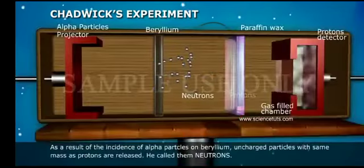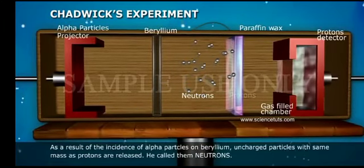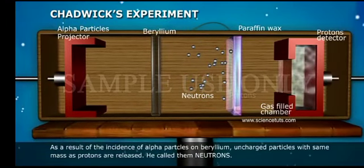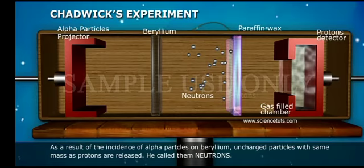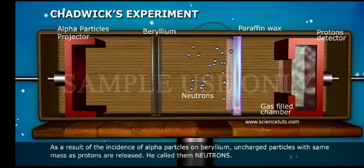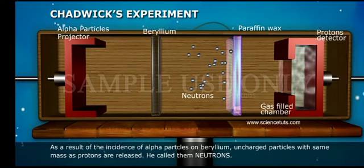As a result of the incidence of alpha particles on beryllium, uncharged particles with same mass as protons are released. He called them neutrons.